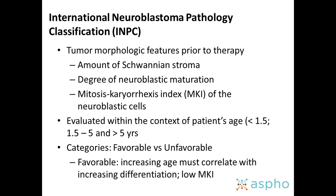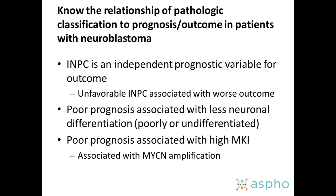The International Neuroblastoma Pathology Classification (INPC) takes into account morphologic features of tumor cells prior to therapy: the amount of differentiation, the amount of Schwannian stroma, and the amount of mitosis in the diagnostic specimen. It also incorporates the patient's age — as a child gets older, you should see more differentiation in the tumor, and those over five years of age should be fully ganglioneuroma, or they have unfavorable histology. The INPC is an independent prognostic variable — children with unfavorable histology have a worse outcome. Poor prognosis is associated with less differentiation and a higher mitotic index.